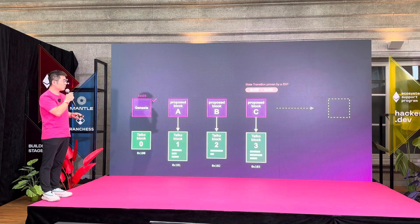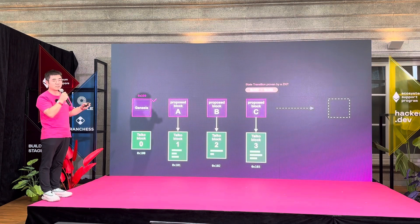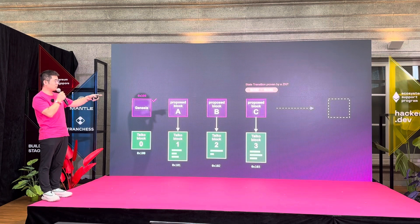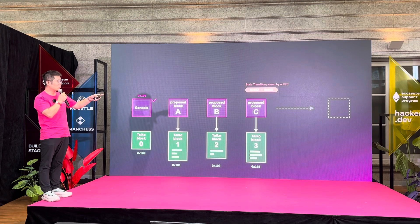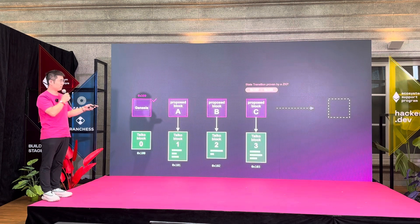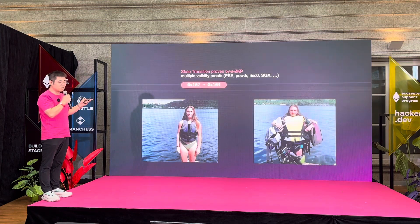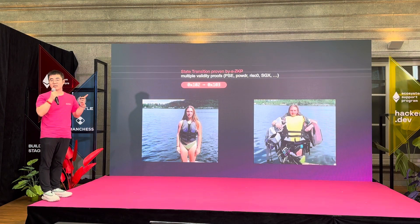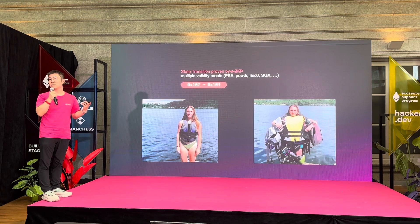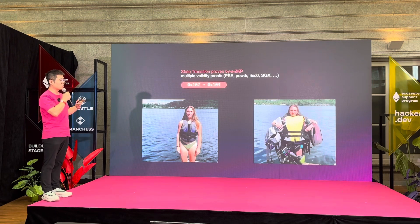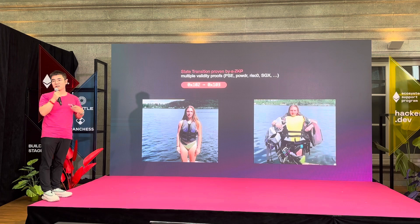What we can do as of now — Taiko allows people to submit a zero-knowledge proof backed state transition. One prover says for block C, or the third block, the parent should be one or two, and this new block hash should be one or three. This is an assertion backed by math. Going forward, we don't believe one ZK proof is secure enough on its own because, due to implementation details, it may be buggy. So in the future we are going to embrace a multi-ZK proof approach to make it more trustworthy.